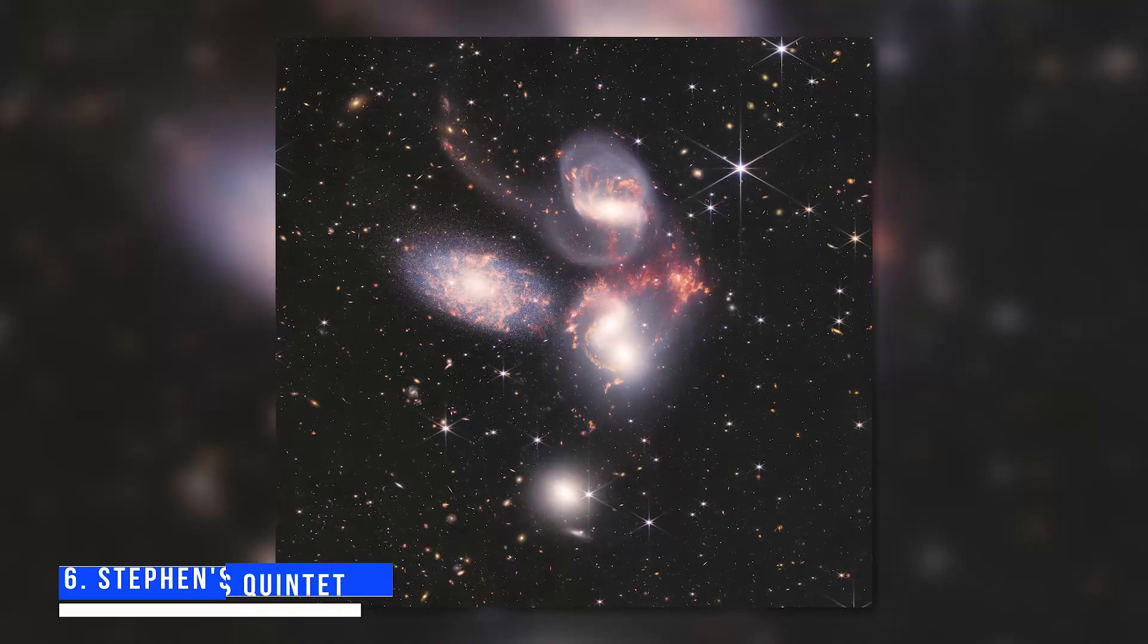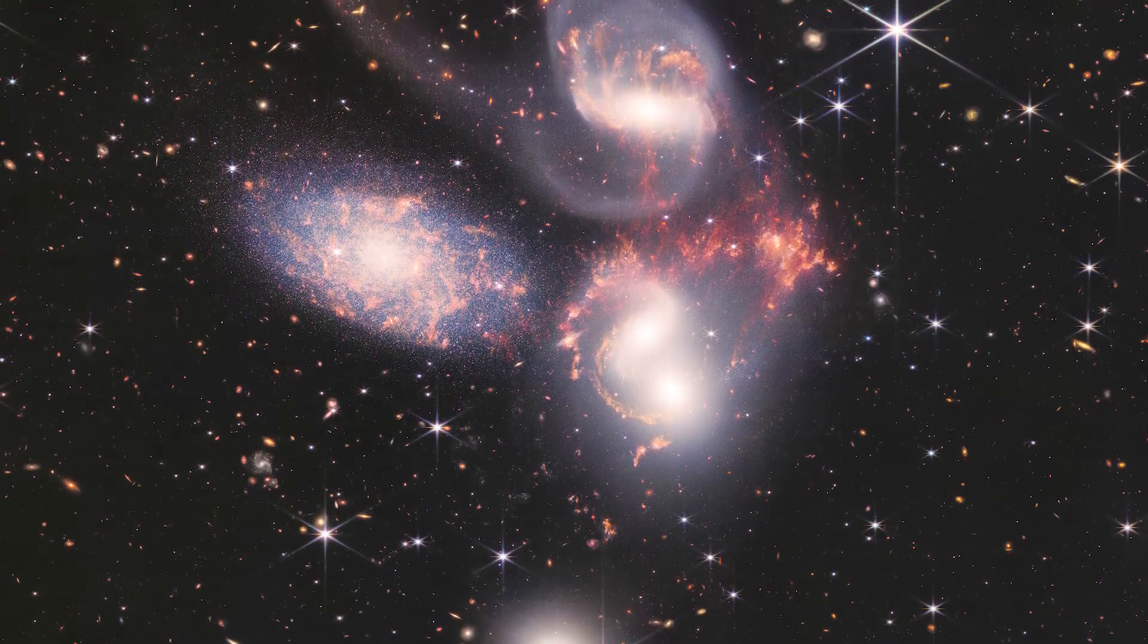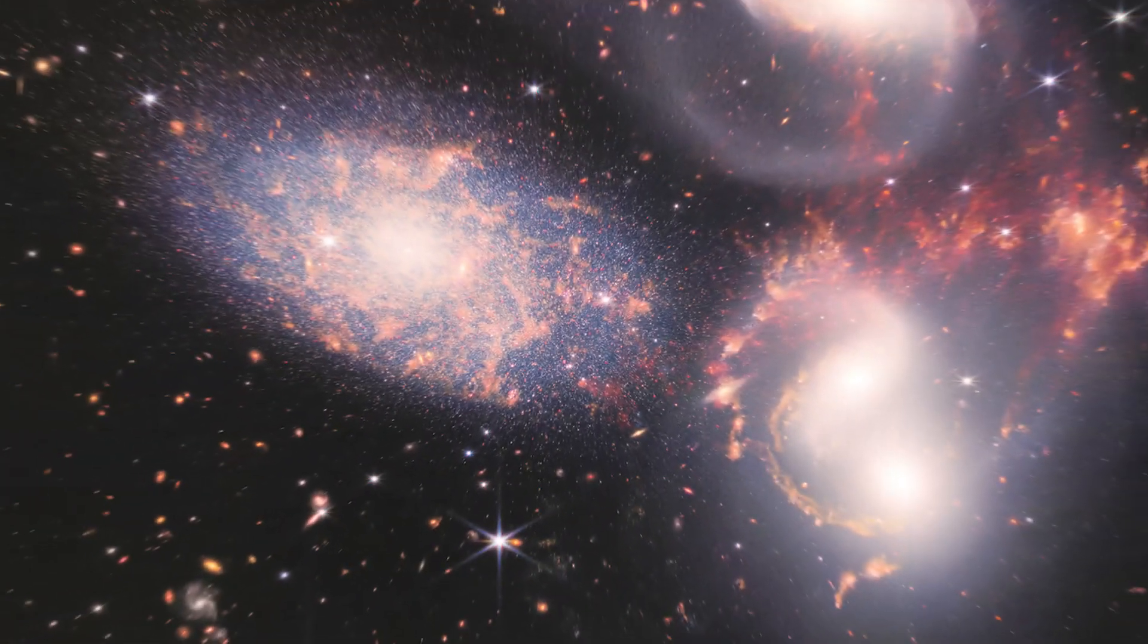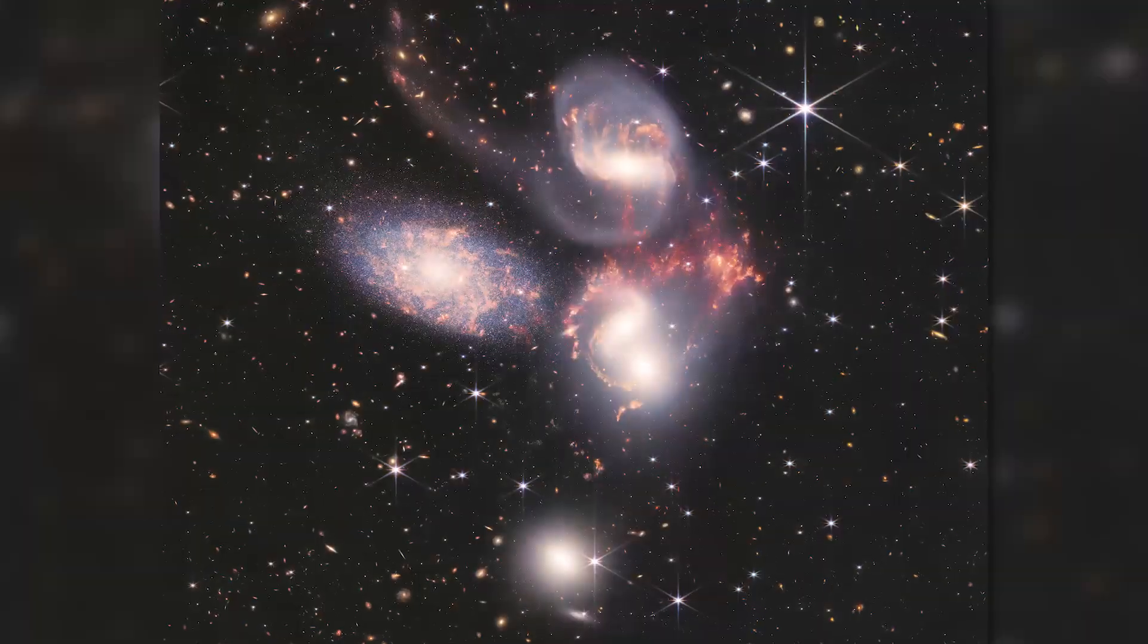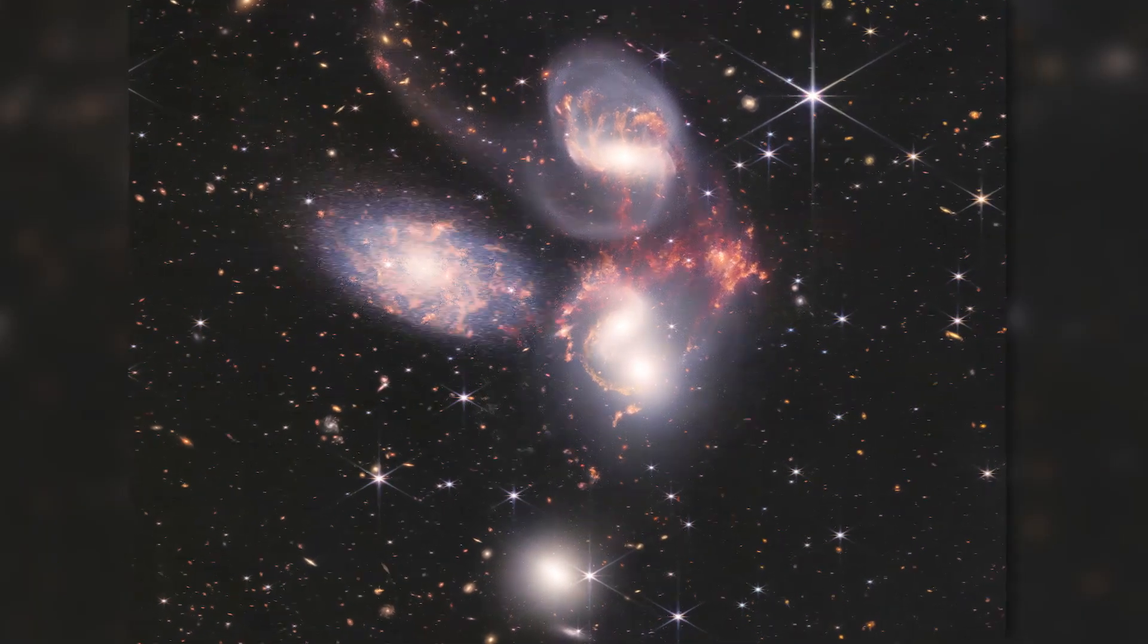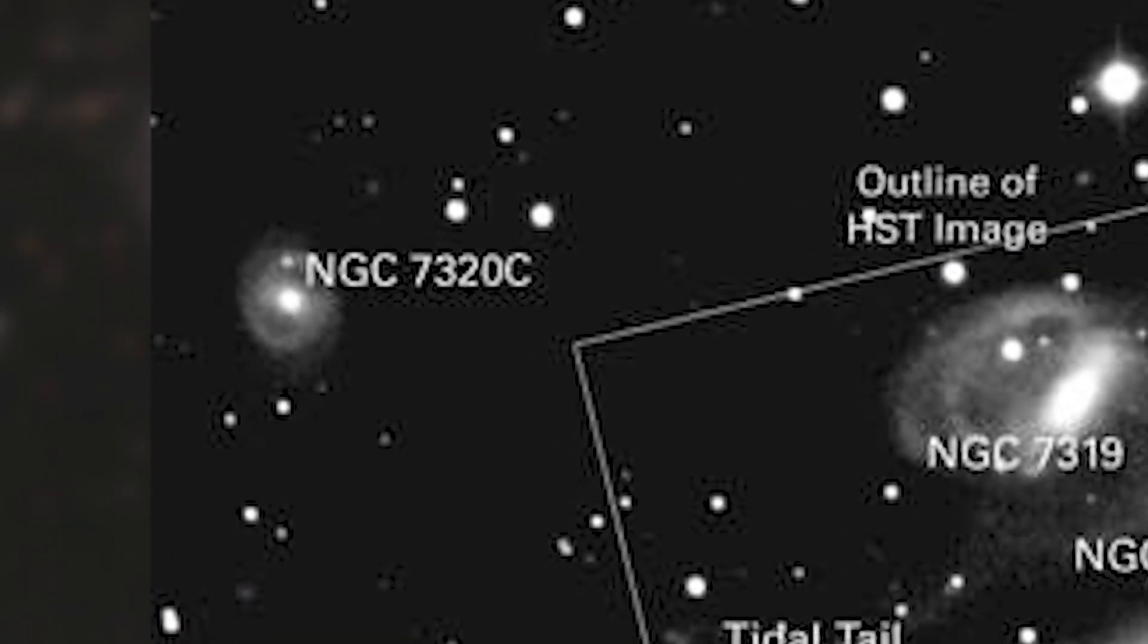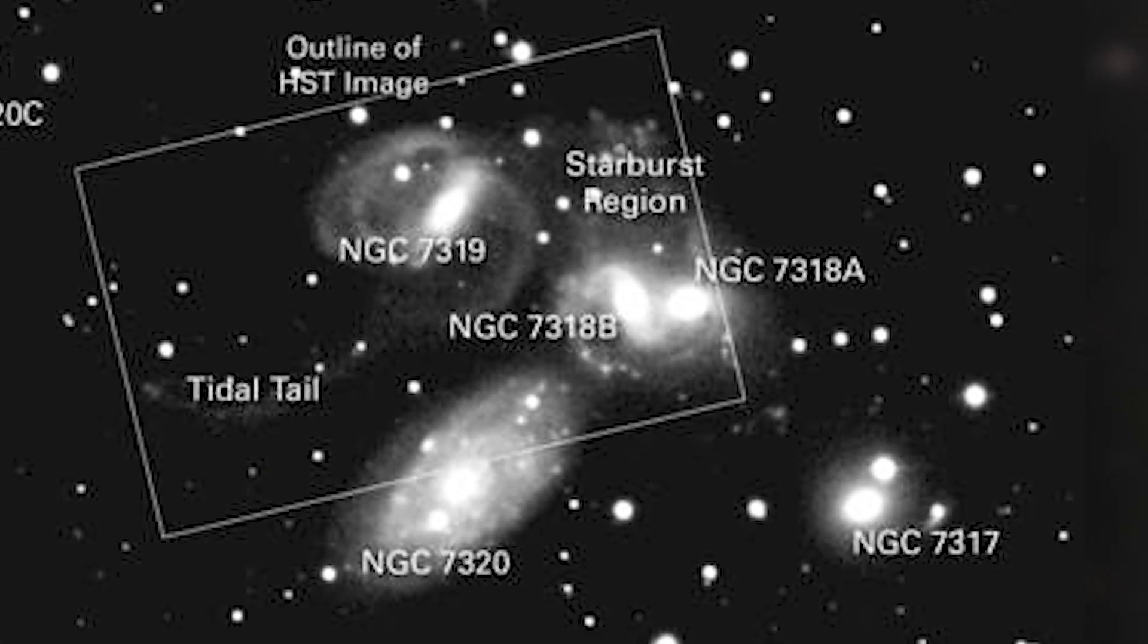Number 6: Stephan's Quintet. This galaxy group was discovered in 1877 by Édouard Stephan, and the James Webb telescope's NIRCam and MIRI sensors have captured previously unseen details in this galaxy group. Despite the name, only four of the galaxies are close and engaged in a cosmic dance. The fifth and most distant galaxy, NGC 7320, is 40 million light-years away from Earth, whereas the other four are 290 million light-years apart.